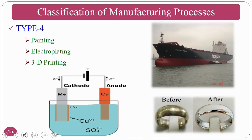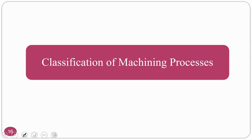3D printing is coming up in a great way as a bottom-up approach where you deposit atom by atom, molecule by molecule, or material layer by layer. This is about manufacturing overall, but in this course we deal particularly with machining and finishing processes — looking at the classification of machining and how we do it.